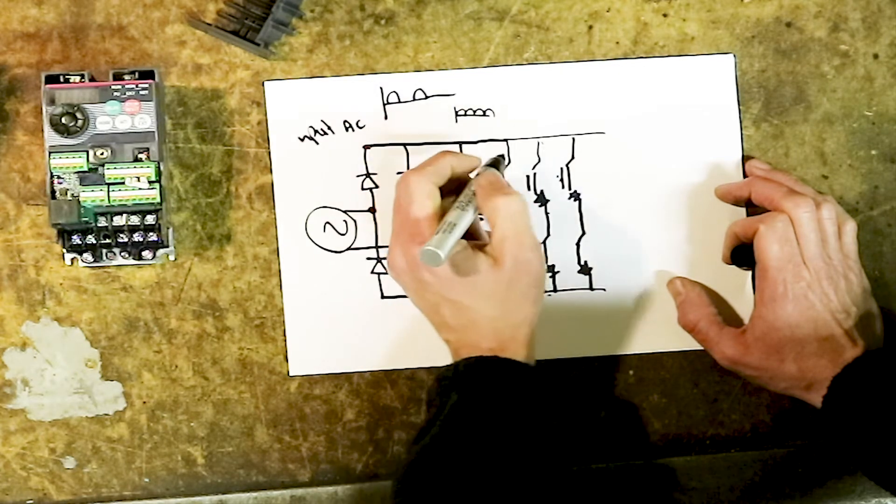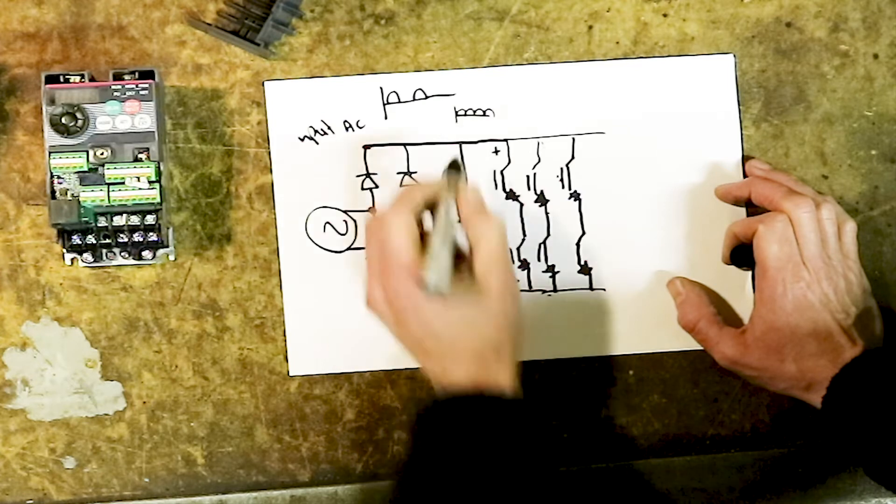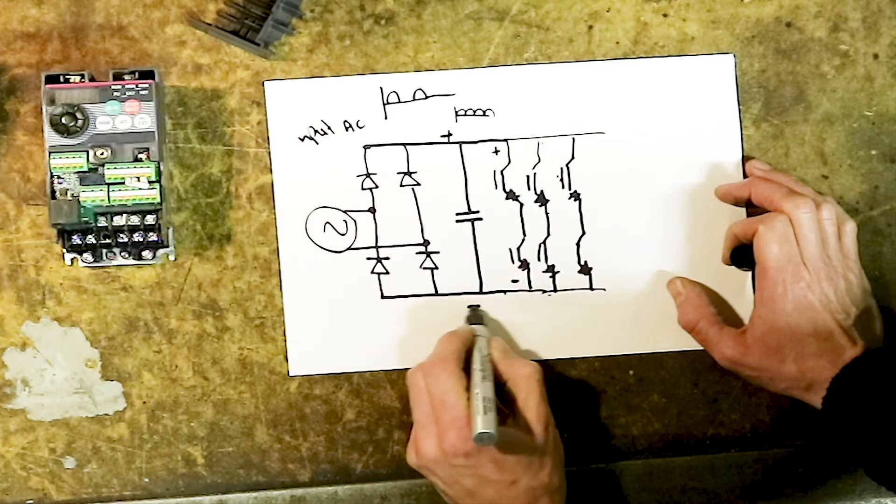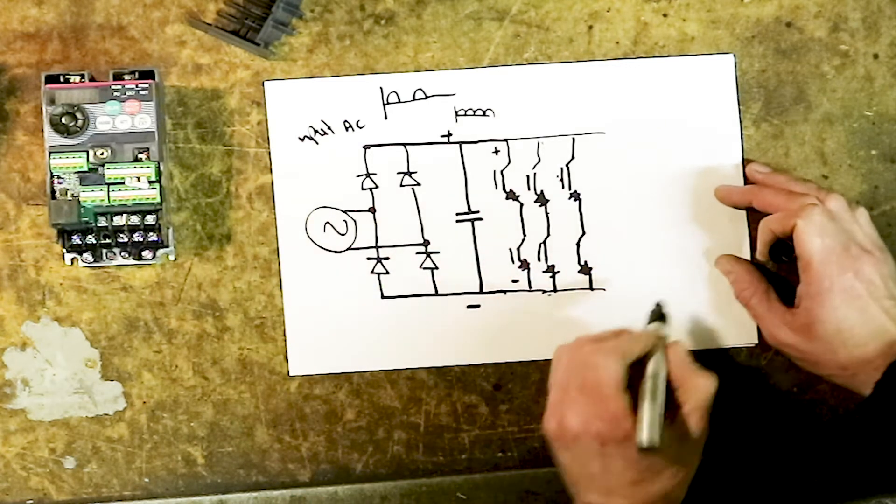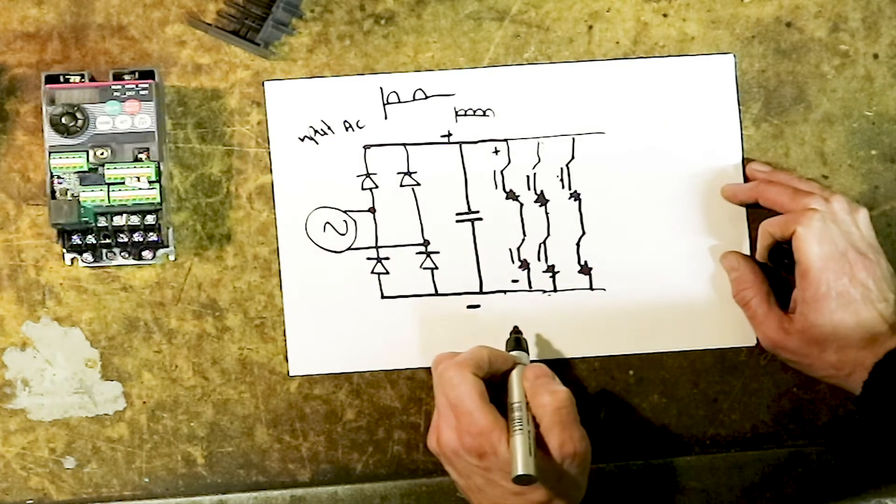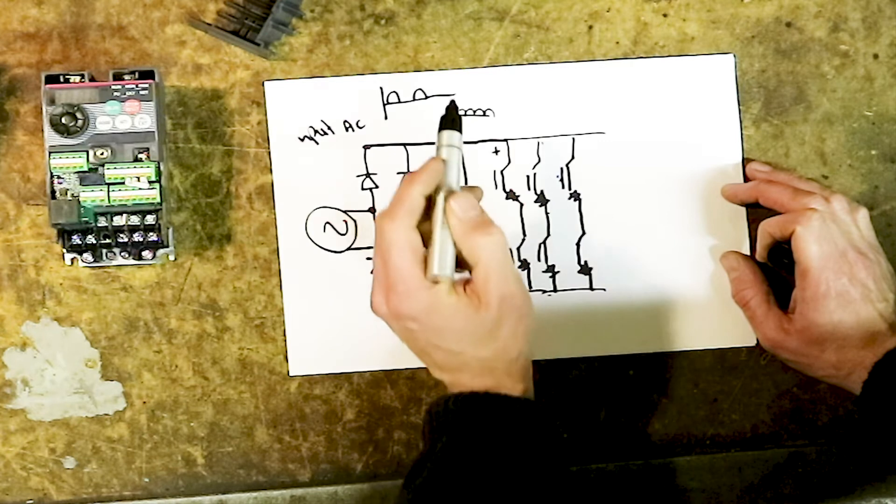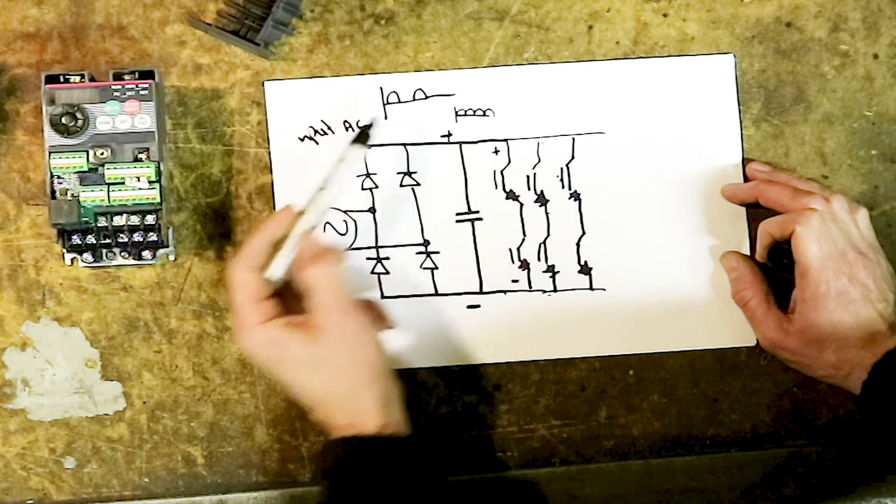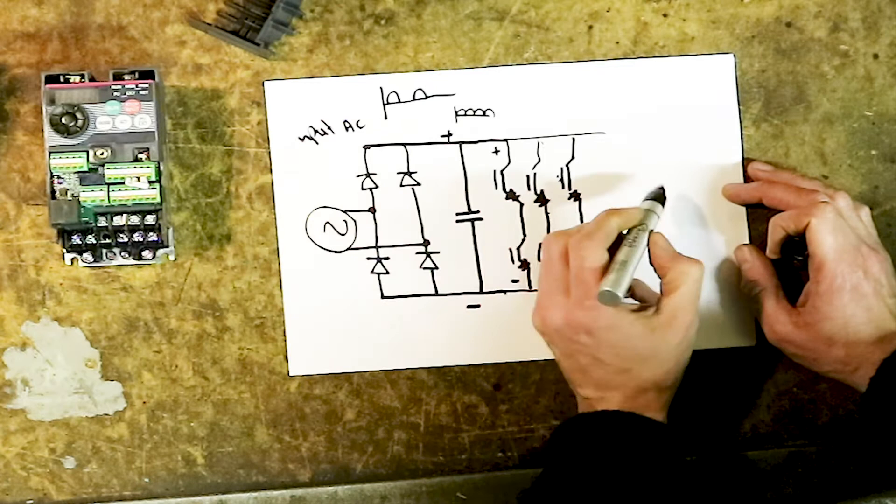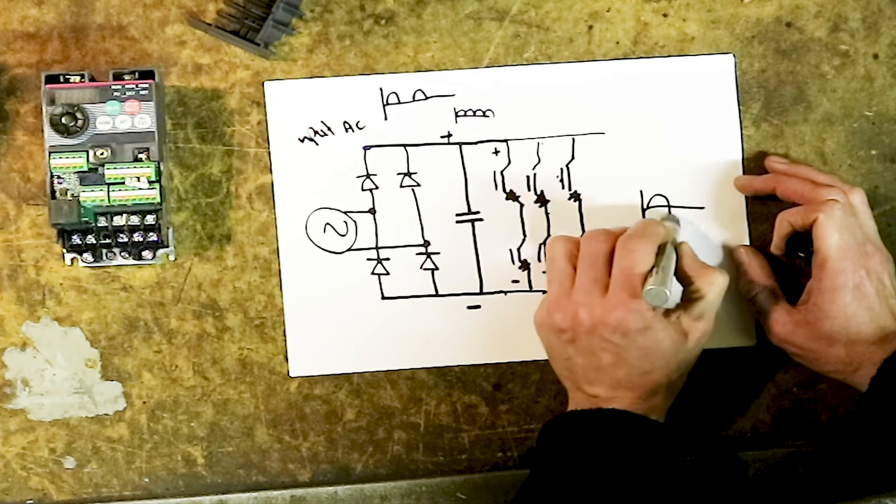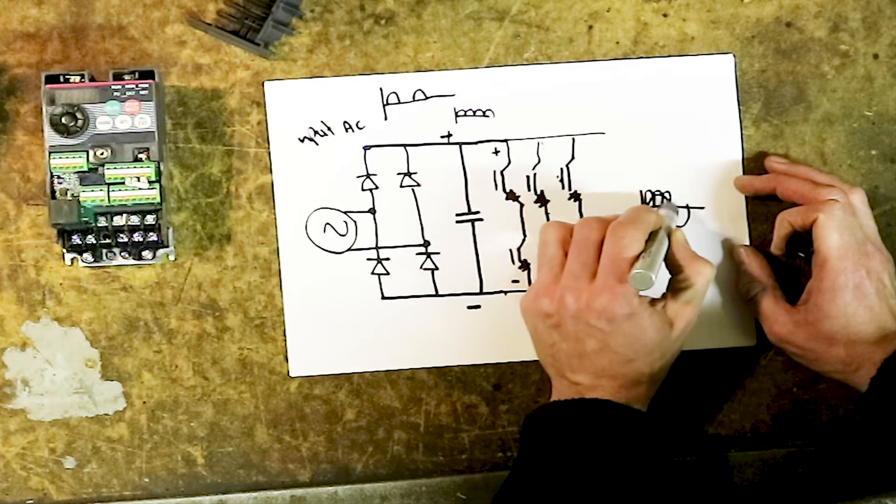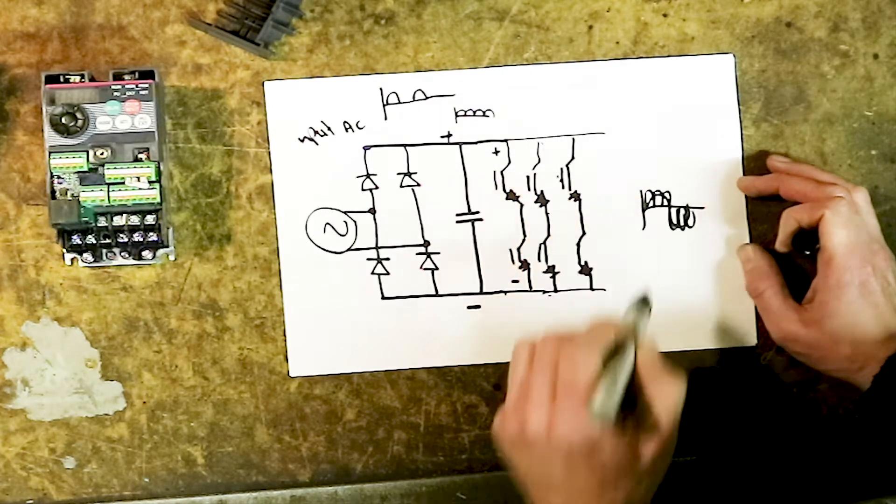So you've got your positive here, negative there. You've got your rectified waveform, and on the output it looks something like this - you've got AC but it's had the frequency inverted.